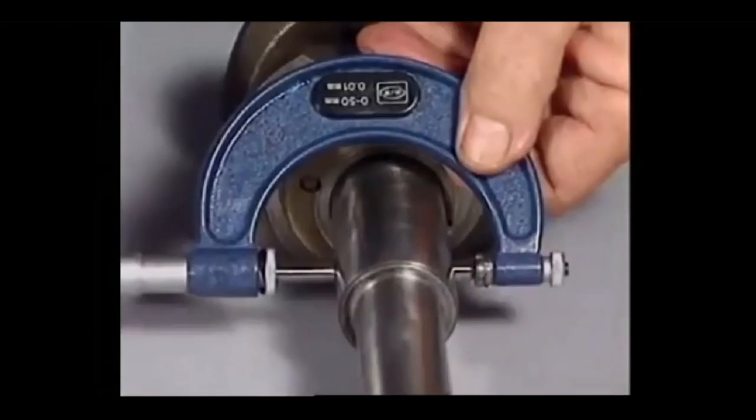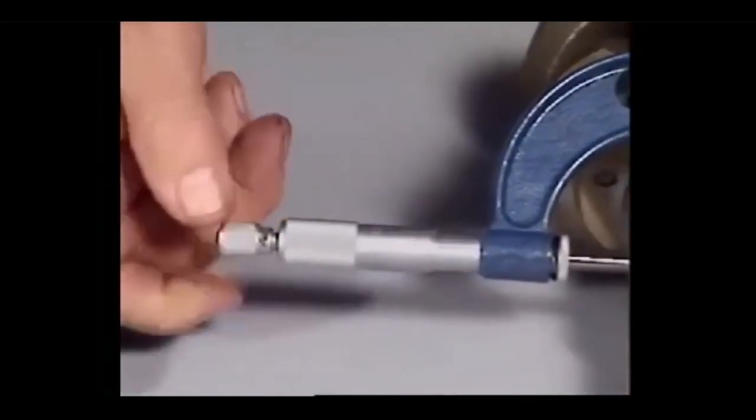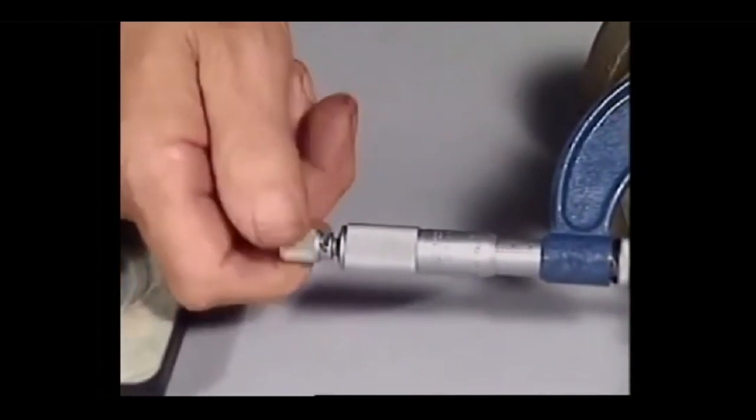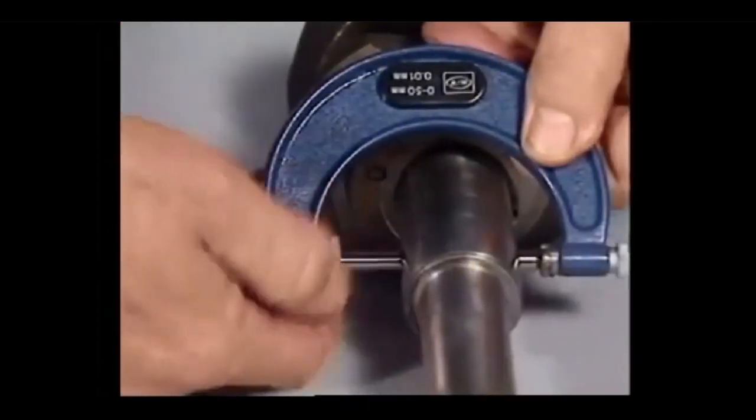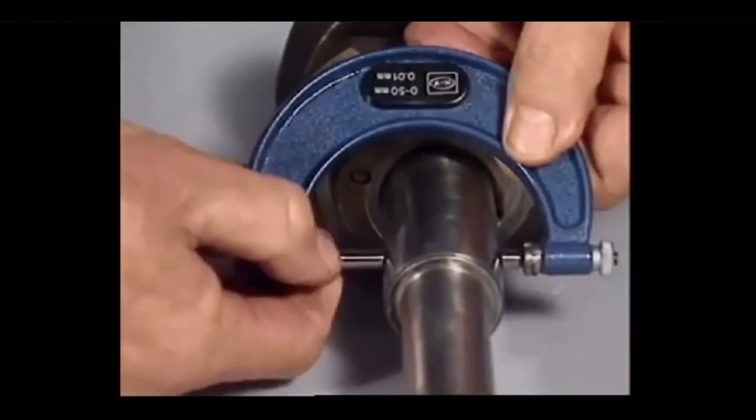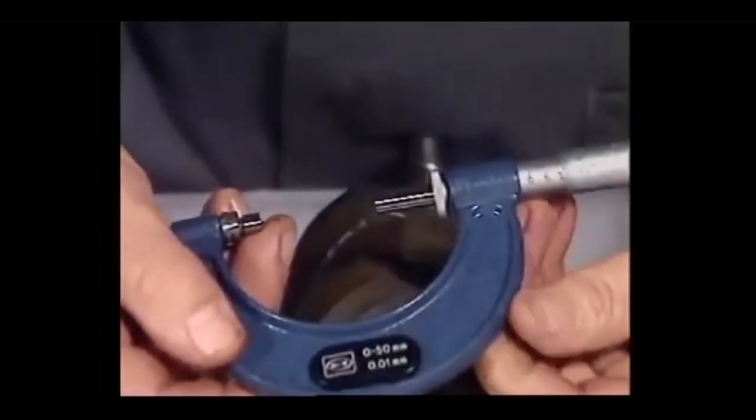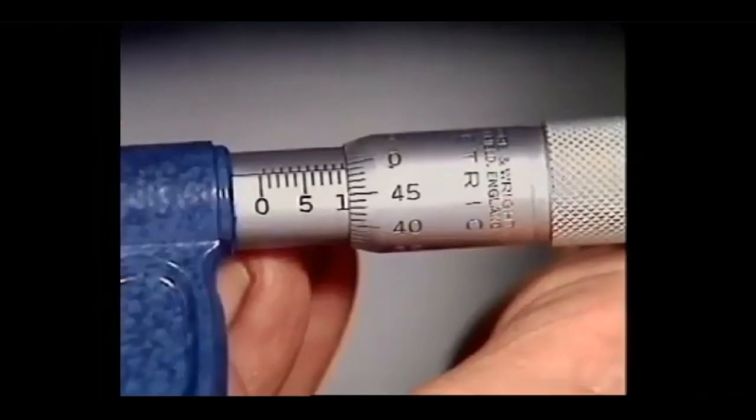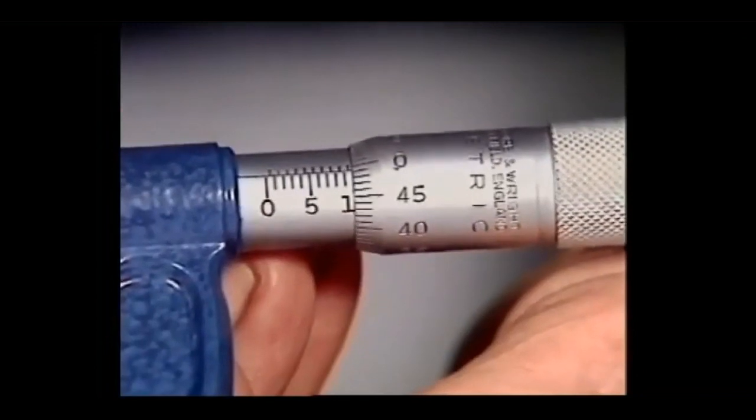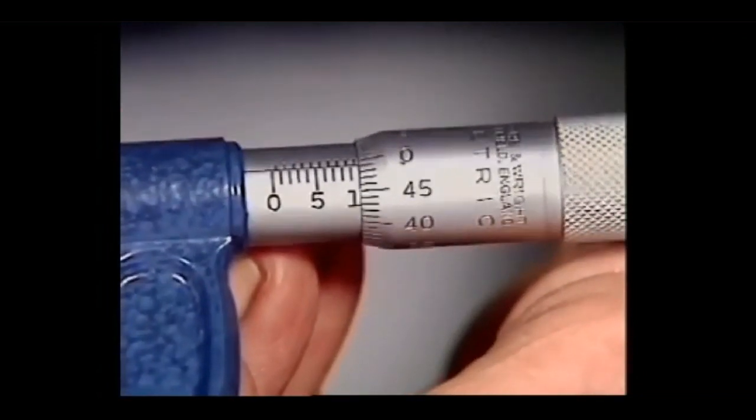The object to be measured is nipped very lightly between the anvil, the part that stays still, and the spindle which moves towards it on a very fine thread. The distance between them is read off the scale on the barrel, down to the finest fraction which is read off the scale that turns on the thimble.